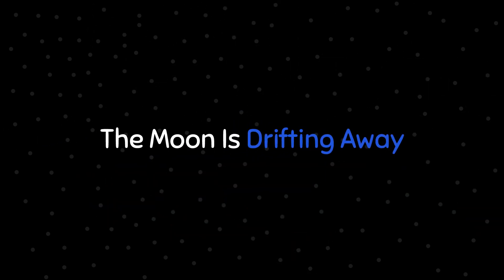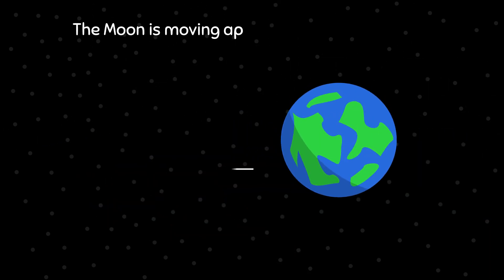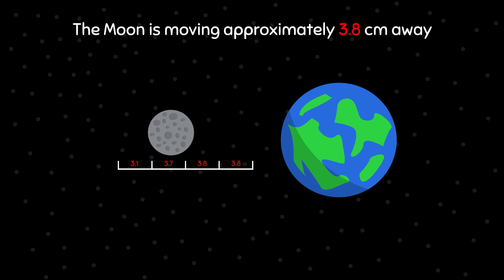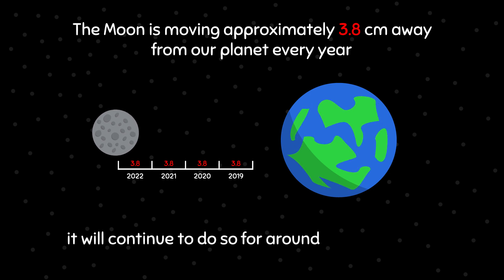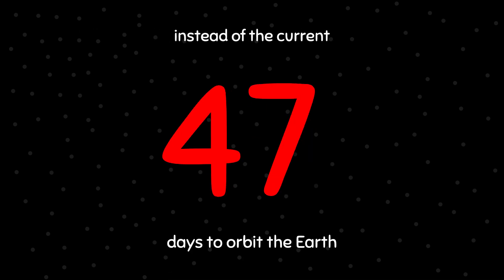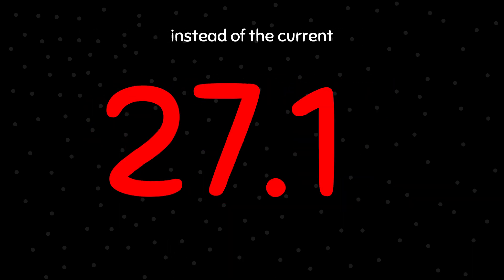The Moon is drifting away. The Moon is moving approximately 3.8 cm away from our planet every year. It is estimated it will continue to do so for around 50 billion years. When that happens, the Moon will be taking around 47 days to orbit the Earth, instead of the current 27.3 days.